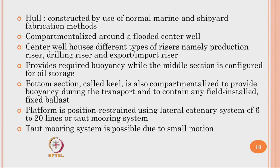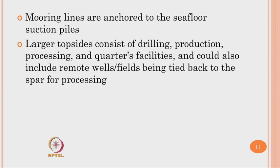The bottom section, called the keel, is also compartmentalized to provide buoyancy during transport and to contain field-installed fixed ballast. The platform is position-restrained using a lateral catenary system comprising about 6 to 20 taut mooring lines. The mooring lines are anchored to the sea floor using suction-type piles. The larger topside consists of drilling, production, processing, and living quarters, and could include remote well fields tied back to the spar for processing.